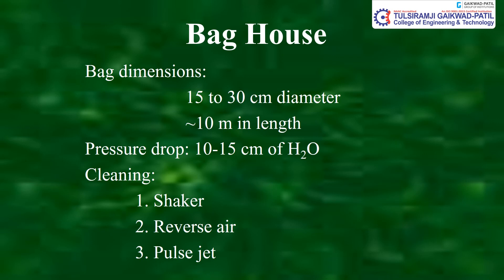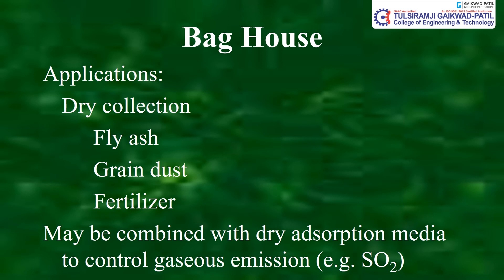Bag house applications include dry collection of fly ash, grain dust, and fertilizers, and it may be combined with dry absorption media to control gas emissions including CO2. I hope you understood the concept of air sampling. We have seen various methods and equipment including bag house, cyclone, spray chamber, air sampling systems, adsorption, oxidation, and meteorological monitoring parameters such as wind, temperature, and rain. The Pollution Control Act was also covered. Thank you very much for watching patiently — we will meet soon in our next video.